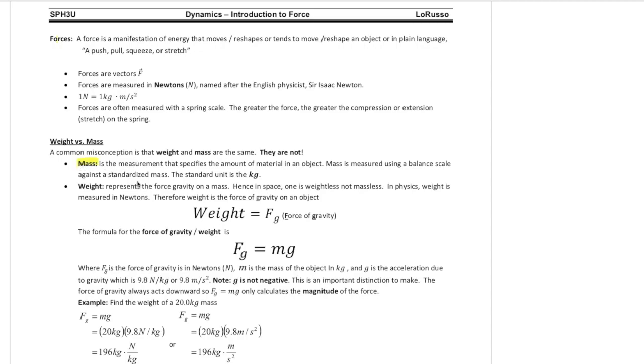So here is the main difference. Mass is defined as the amount of material in an object. And it is measured by using a balanced scale. Kind of like the triple beam balances that you use back in grade 9. And the standard unit is the kilogram. So it's really just a measure of how much stuff is in an object.